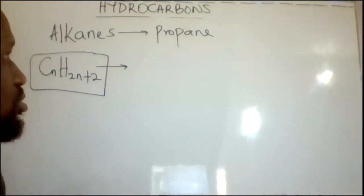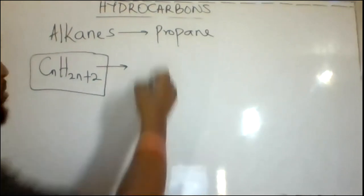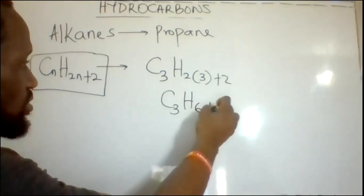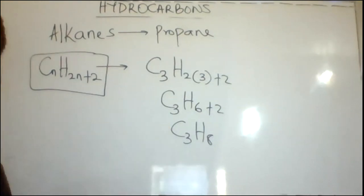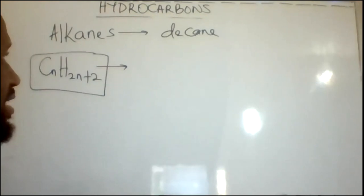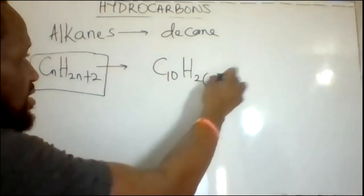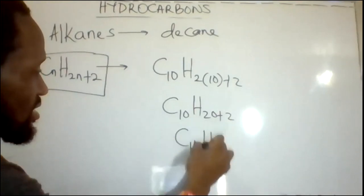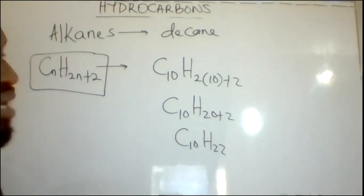This formula can be applied to all alkanes because it is the general molecular formula. The third member is propane: C3H(2×3+2) = C3H8. For decane, the tenth member, it becomes C10H(2×10+2) = C10H22. We can keep applying this formula to get the specific formulas for all members of the alkane series.